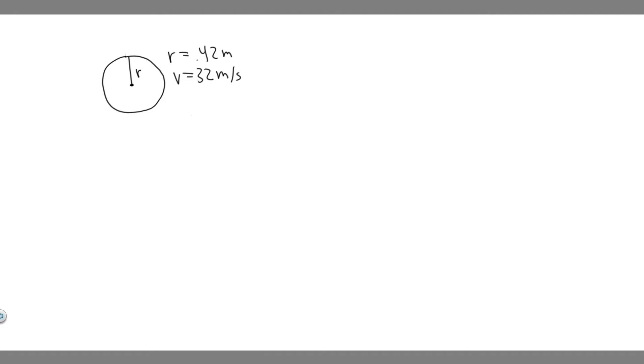So what we're going to be doing in this problem is solving for omega, which is the angular velocity. We want to find what the angular velocity is. We have this tire, its linear velocity is going to be 32 meters per second, and we know the radius is 0.42 meters.